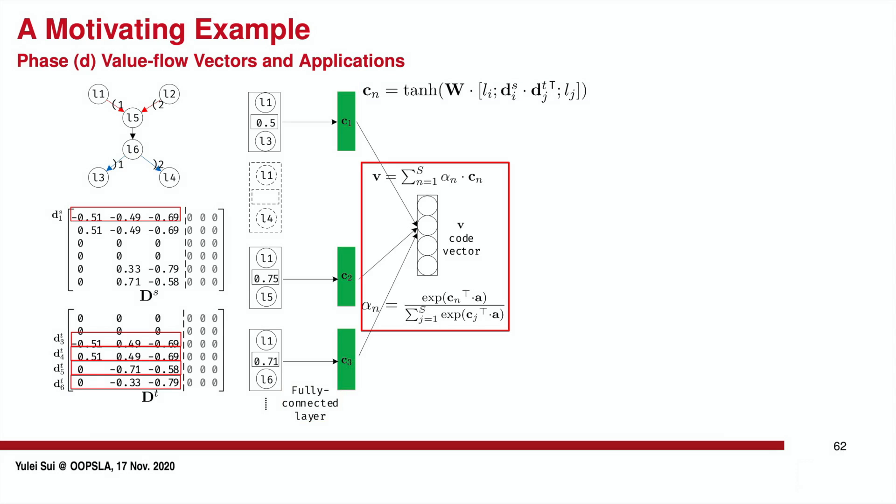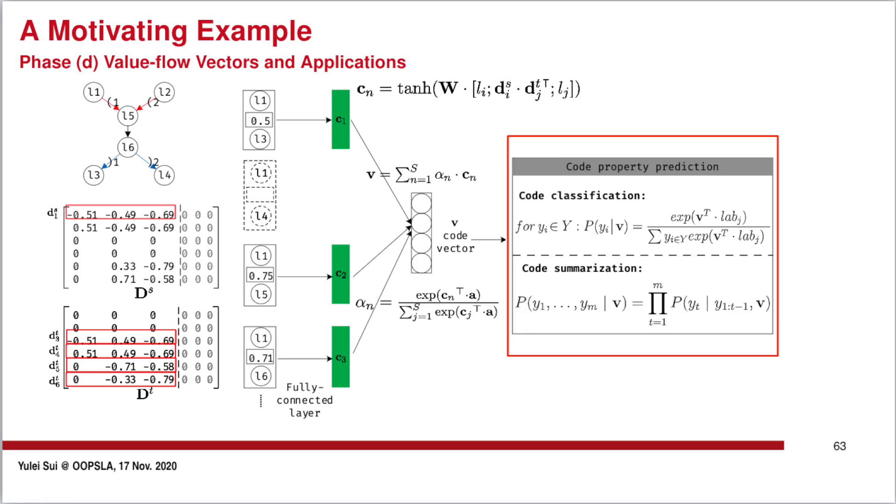Based on these value flow path vectors and attention mechanism, we can produce a final code vector V, which preserves the interprocedural context-sensitive information of a target profile. The vector V can then be utilized for tasks such as code classification and summarization.